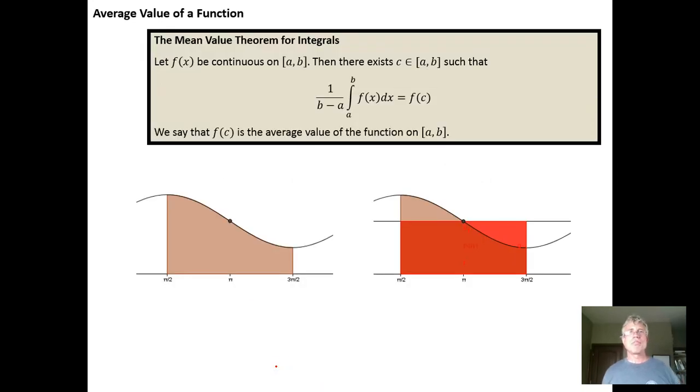Just to refresh your memory in Calculus 1 we define the average value of a function over a line segment from A to B to be 1 over the length of the line segment divided by the area under the curve on the interval from A to B. So we integrated from A to B the function f(x) dx, we calculated the area under the curve, and then we divided by 1 over the length of the line segment.